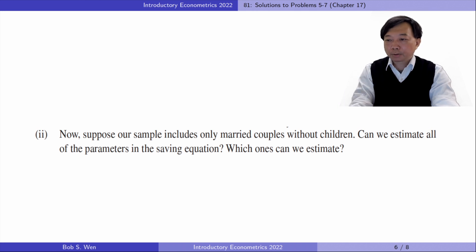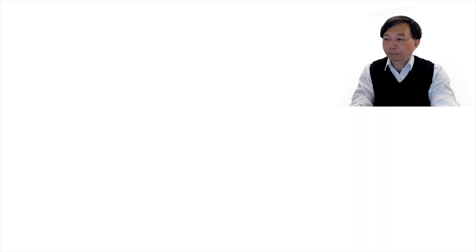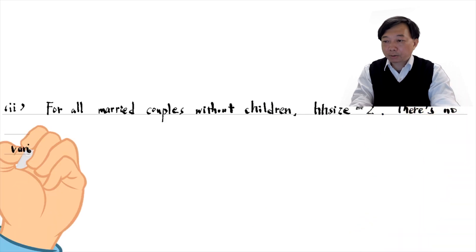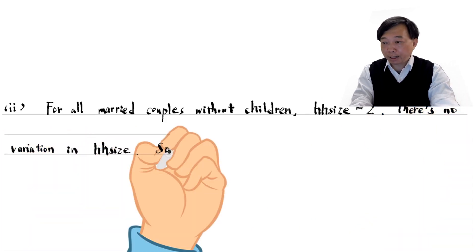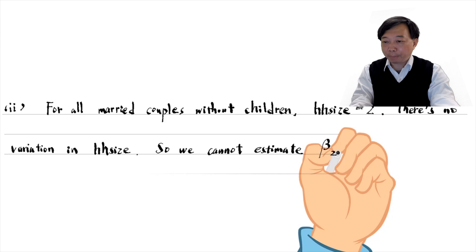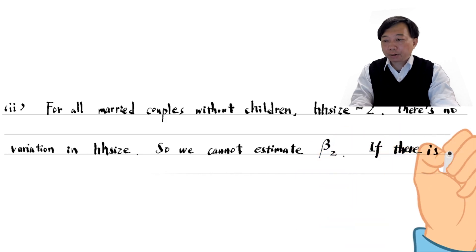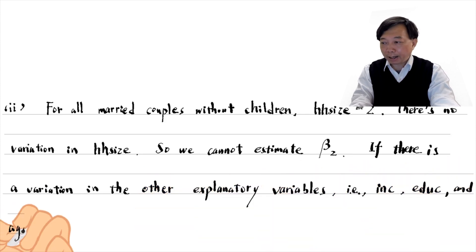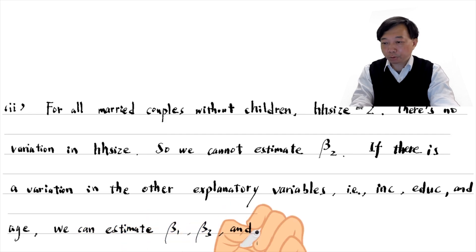In part 2, suppose our sample includes only married couples without children. Can we estimate all of the parameters in the saving equation? Which ones can we estimate? For all married couples without children, the family size is 2. There is no variation in the variable household size. So, we cannot estimate beta 2. If there is variation in the other explanatory variables, income, education and age, we can estimate beta 1, beta 3 and beta 4.